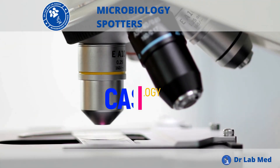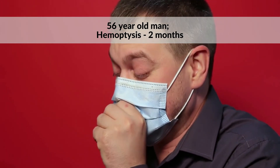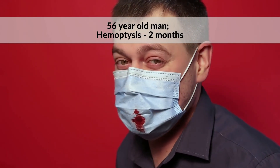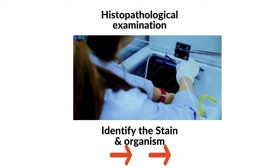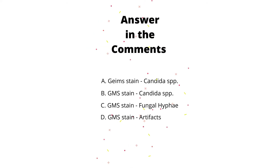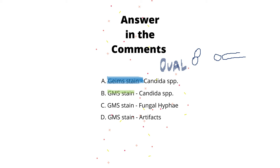Coming to the third clinical case: a 56-year-old diabetic man presented with hemoptysis for the past two months. Histopathological examination of lung tissue revealed this picture. Identify the stain and probable organism. In option A, if Giemsa stain is used, it stains acidic cells as blue-violet and basic cells as red, so Candida appears as oval budding yeast cells with pseudohyphae. GMS stands for Grocott-Gomori methenamine silver staining and is used to screen fungal organisms.